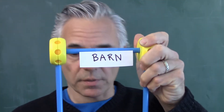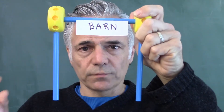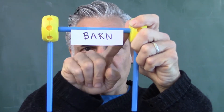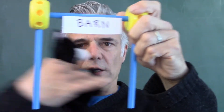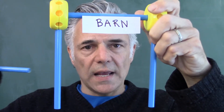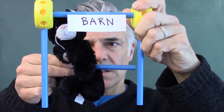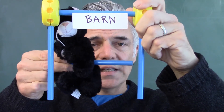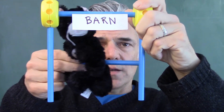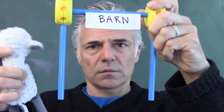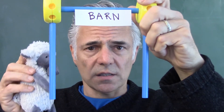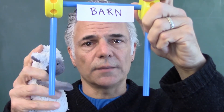Anastasia happens to be standing next to a barn — you can tell because it says barn — and this barn is also eight meters wide. How convenient. So Beowulf runs through the barn; there's a door on each side. Beowulf is running through with his eight-meter stick, and there's an instant in time in which the stick is completely enclosed by the barn. Then Beowulf zips out the other side. Anastasia in the rest frame observes a moment in time when Beowulf's stick is completely enclosed by the barn.